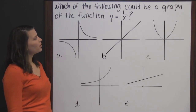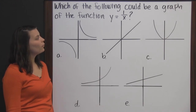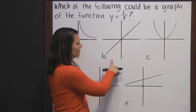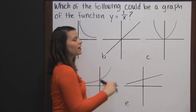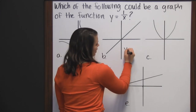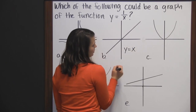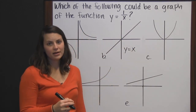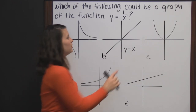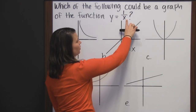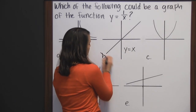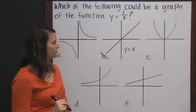Which of the following could be a graph of the function y equals 1 divided by x? Let's start with B — this is a linear function. In fact, it even looks like the parent function of a linear function, which is y equals x. So not y equals 1 divided by x. By the way, this is called a rational function. The root 'ratio' means a comparison of two numbers, or a fraction. And B is not the graph of a rational function — it's the graph of a linear function.